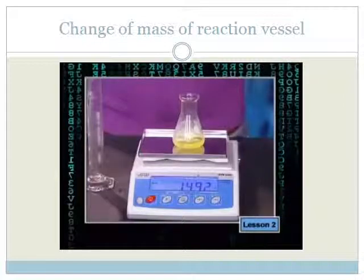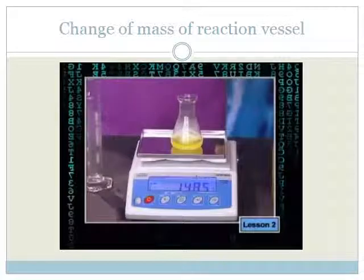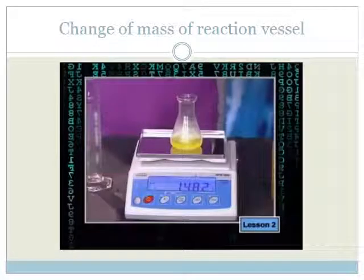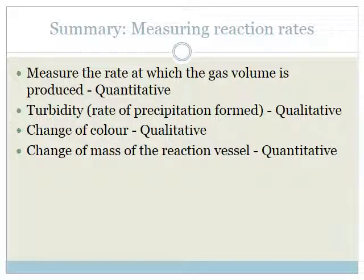If we let the gas escape from an open container, the reaction mixture will decrease in mass. We can then work out the reaction rate by working out the change in mass in a set time. To summarize, the ways to measure reaction rates are: you can measure the rate at which the gas volume is produced — note that it's different from measuring how much gas is produced; that is not a rate. You want to know how quickly or slowly it's produced, so the important words are 'per unit time.' Because we can measure it, this method is quantitative.